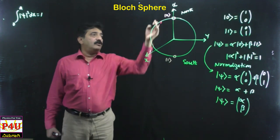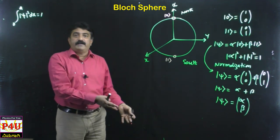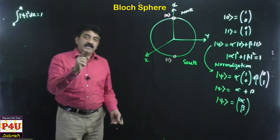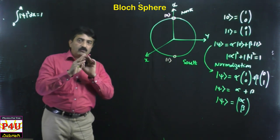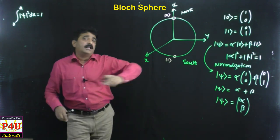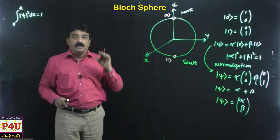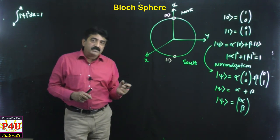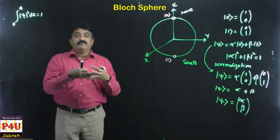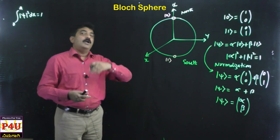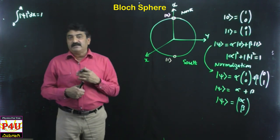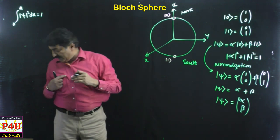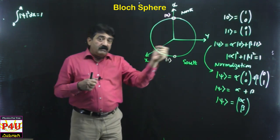You may ask: to represent just 0 and 1, why do we need such a huge sphere? Here is the beauty — we don't have only 0 and 1. We have n number of states in between 0 and 1. This is nothing but superposition. Qubits undergo superposition; 0 and 1 combine together to give a new state — something in between also.